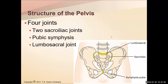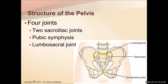There are four overall joints of the pelvis. We have our two sacroiliac joints, joining the sacrum with the iliac crests. We have our pubic symphysis. And then we have our lumbosacral joint, which is where the lumbar vertebrae meet up with the sacral vertebrae. Those are the typical joints we talk about when discussing pelvic problems with patients.